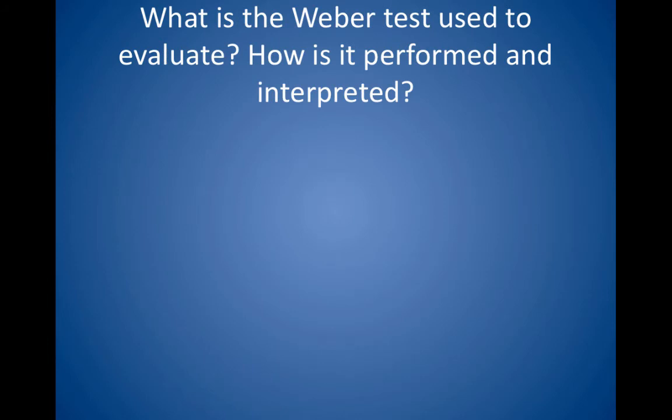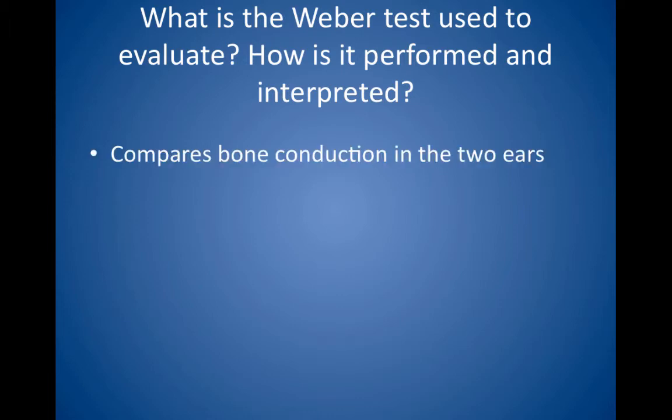What is the Weber test used to evaluate? How is it performed and interpreted? The Weber test compares bone conduction in the two ears. A vibrating tuning fork is placed on the forehead and the patient is asked where the vibrating sound is heard best. The normal response is to hear the vibration in the middle or equally in both ears. In patients with conductive hearing loss, the sound is heard best in the affected ear, whereas in patients with sensorineural hearing loss, the sound is heard best in the unaffected ear.